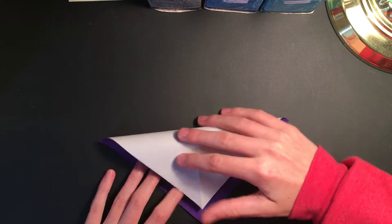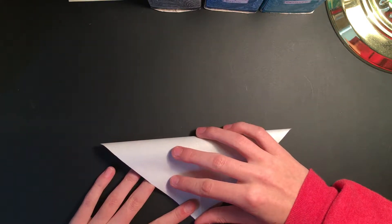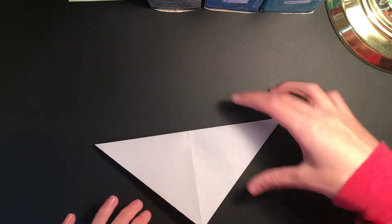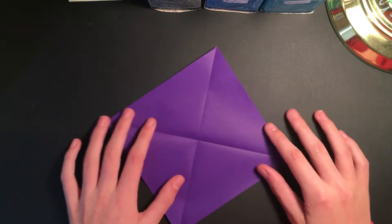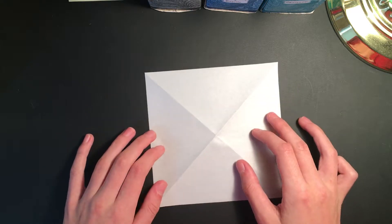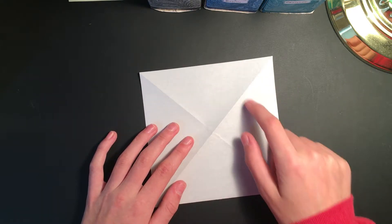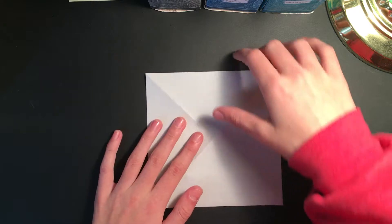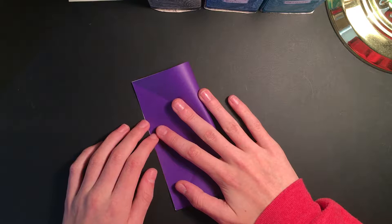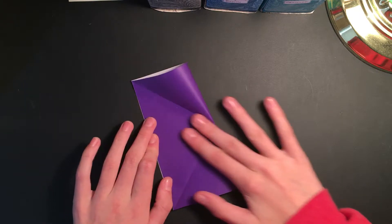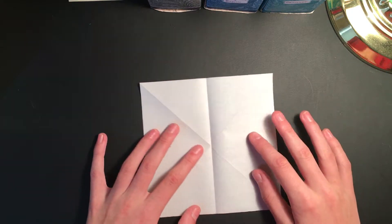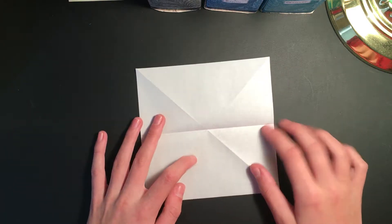Now we're going to flip over our model and turn it so that it looks like a square. We're going to have an X running through the center. Now we're going to fold the right side to the left side, unfold, rotate ninety degrees and repeat.